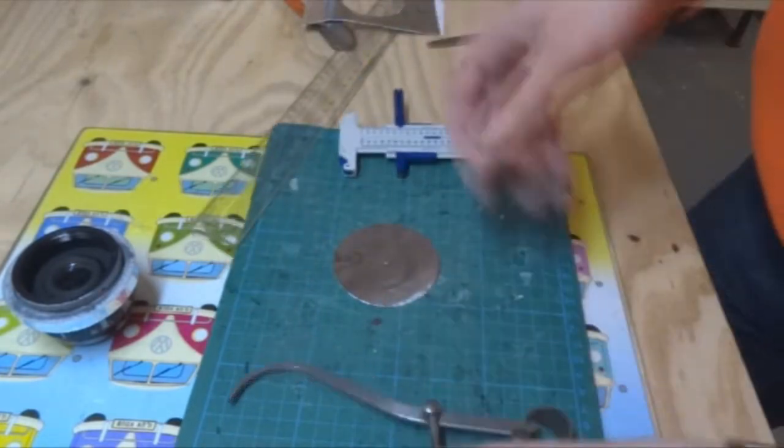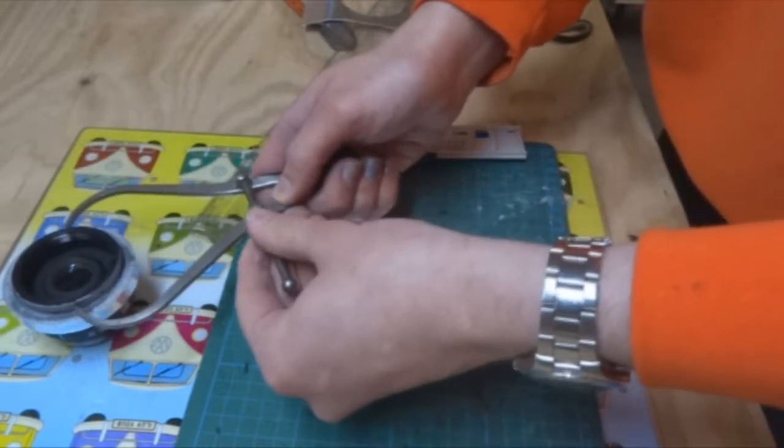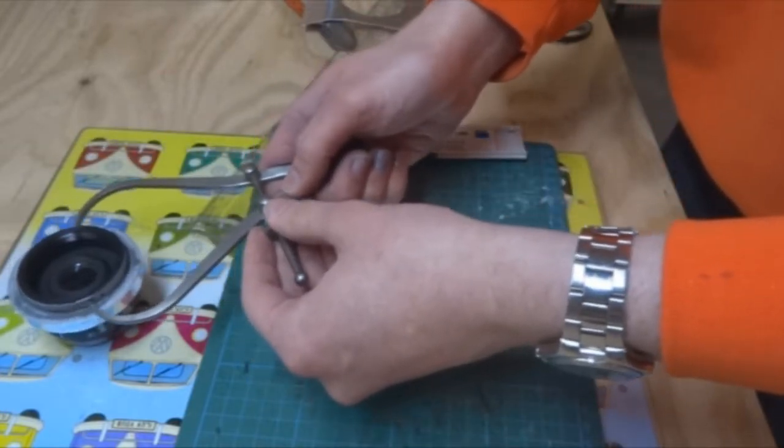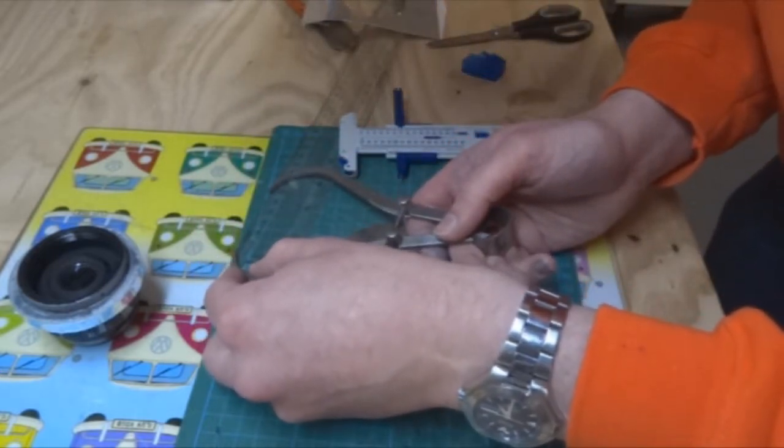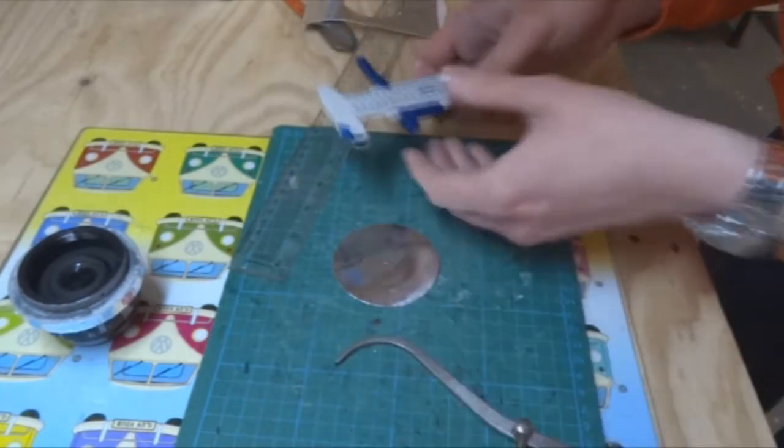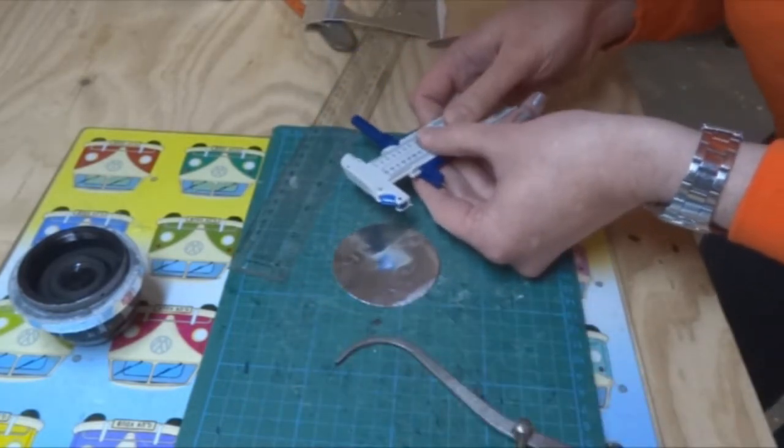And then I'm going to do the same to take an inner diameter for that - an outer diameter of the lens, an inner diameter for my circle. Again, just measuring with this set of calipers, and then transferring that onto the scale on the compass cutter.